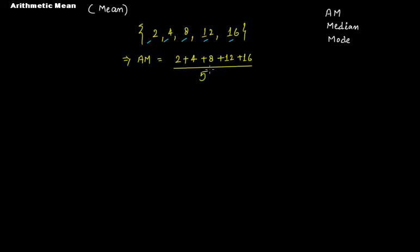Divide this addition by five. Four plus two is six, plus eight is fourteen, plus twelve is twenty-six, plus sixteen is forty-two. So forty-two divided by five. You can simplify it and write in the form of a decimal number, or you can represent this as a mixed number. If you write this as a mixed number, that will be eight and two-fifths.